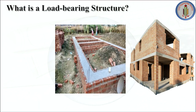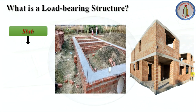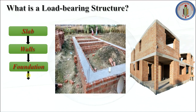In load bearing structure there will not be any beam or column to transfer the load. There will be a slab, and that slab load will directly transfer to the wall, and from the wall it transfers to the foundation. The load transfer mechanism is: slab to wall, wall to foundation, and foundation to soil.